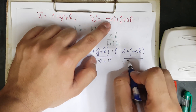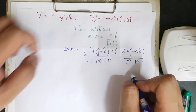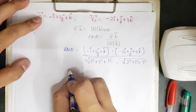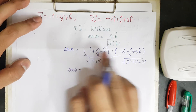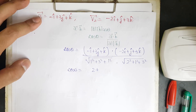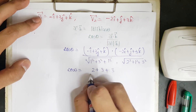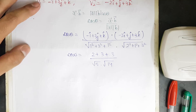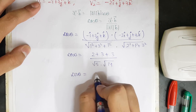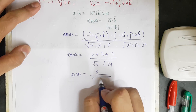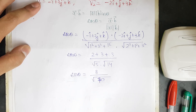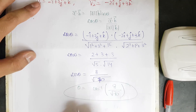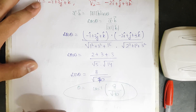Calculating: the dot product (−î+3ĵ+k̂)·(−2î+ĵ+3k̂) = (−1)(−2)+(3)(1)+(1)(3) = 2+3+3 = 8. The modulus of v₁ = √(1+9+1) = √11... actually |v₁|=√(1+9+1)=√11 and |v₂|=√(4+1+9)=√14, giving |v₁||v₂|=√(11×14). So cos θ = 8/√70, and θ = cos⁻¹(8/√70). This is how you find the angle between two lines in Cartesian form.